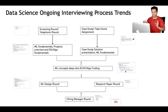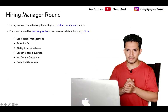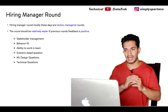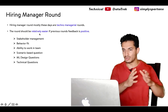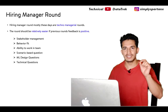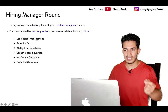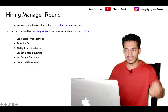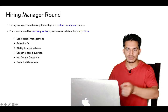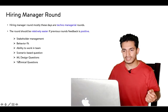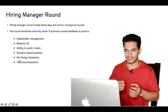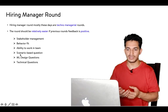After these main rounds, the final round is typically a hiring manager round. From my experience and from what friends have shared, hiring manager rounds are mostly techno-managerial. The round becomes relatively easier if previous round feedback is positive. The manager primarily tests stakeholder management capabilities, behavioral fit, and ability to work in a team. Scenario-based questions may be asked about tough situations or conflicts at work. It can sometimes also include ML design questions and technical questions on data science, ML, and statistics.